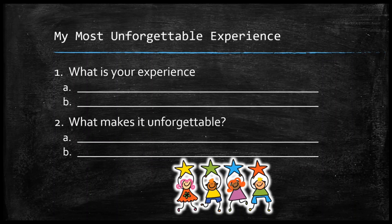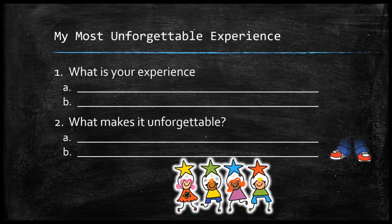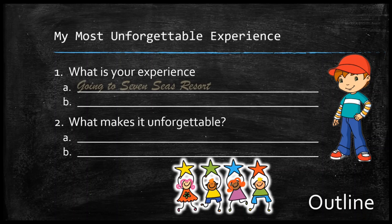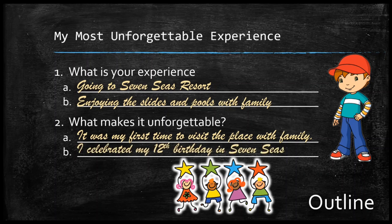I will be asking myself: for the first paragraph, what is your experience? And for the second paragraph, what makes it unforgettable? My experience was going to Seven Seas Resort, where I enjoyed the slides and pools with my family. What makes it unforgettable? It was my first time to visit the place with family — we usually do not forget our firsts. And of course, I celebrated my 12th birthday at Seven Seas. So, outlining is used to organize ideas by listing points down, and in this way you are organizing your thoughts.